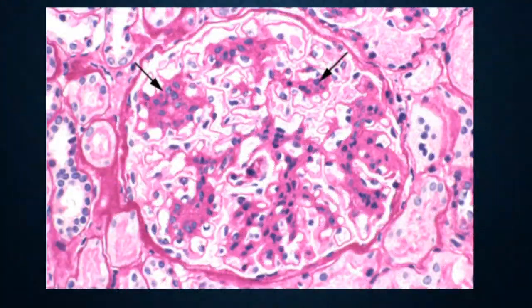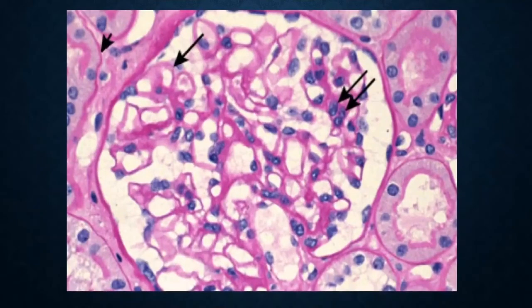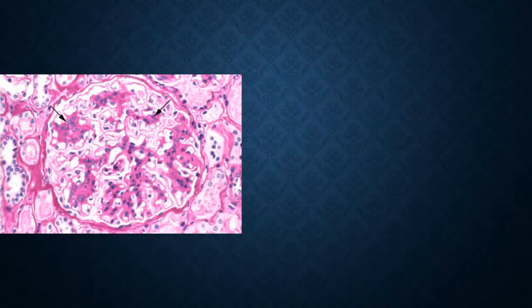This is a renal biopsy light microscopy image of a glomerulus. The five important findings in the first image are: there is segmental mesangial matrix and cellularity expansion.